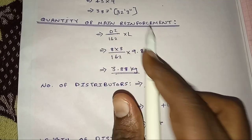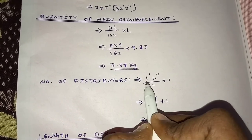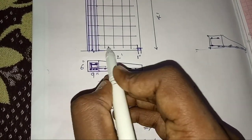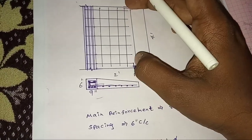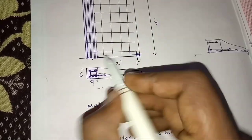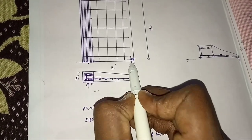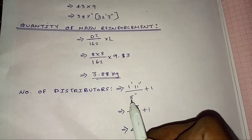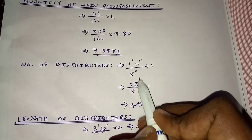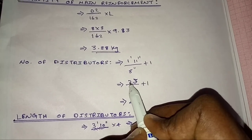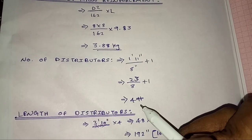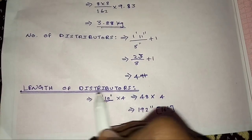This is quantity of main reinforcement. Number of distributors. 1 foot 11 inch divided by 8 inch. This is the distributors. Distributors length cover 11 inch, already 11 inch divided by distributor spacing 8 inch plus 1.